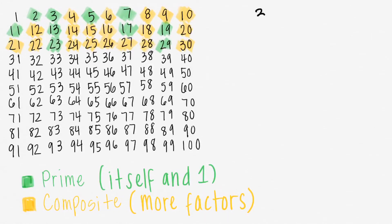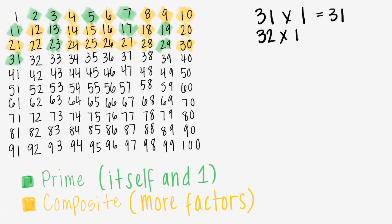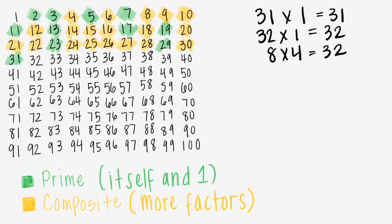31 times 1 equals 31, and there's no other way, so 31 is prime. 32 times 1 equals 32, and 8 times 4 equals 32, so 32 is composite. Alright Math Grizz, you get the point. You can go ahead and fast forward or quickly watch the rest.